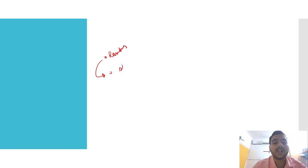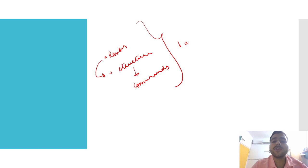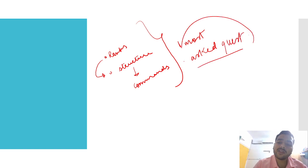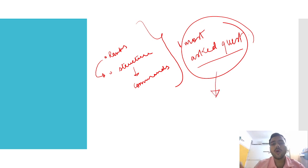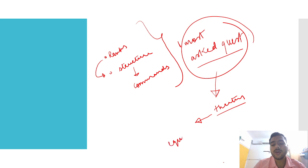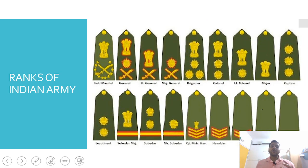We'll follow a very schematic way — first we'll go around ranks, after ranks we'll go to the structure, after structure we'll go to commands, and once you are done with this your most asked question is already covered. After that we'll try to understand theaters, and then we'll move on to equipment. So without wasting any time, let's start.